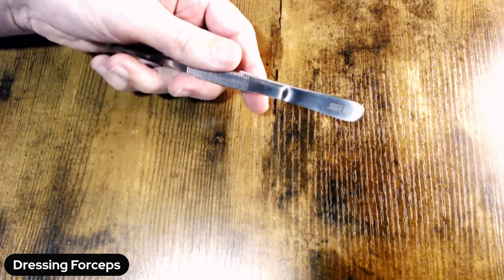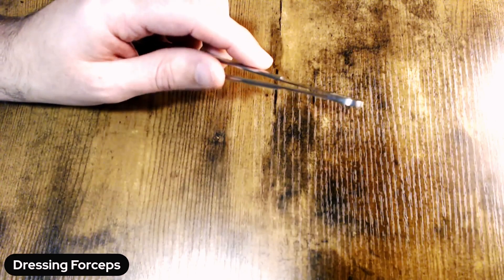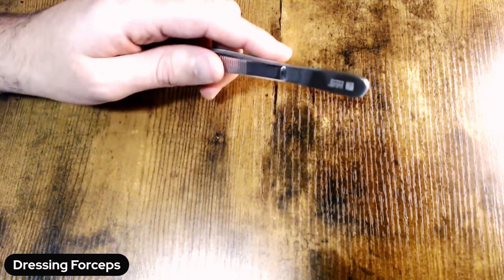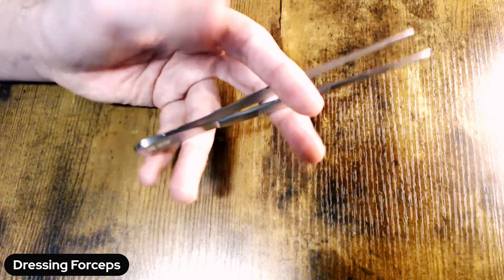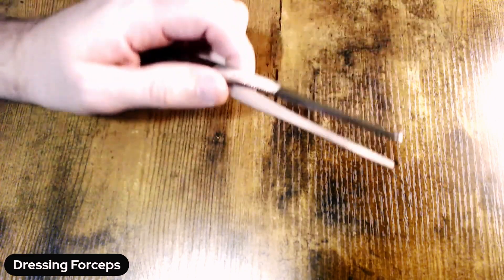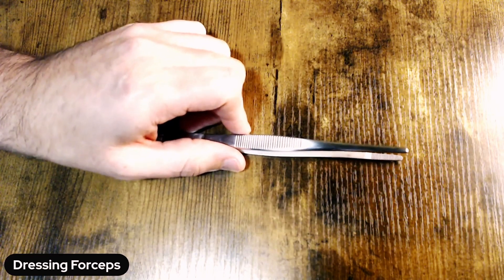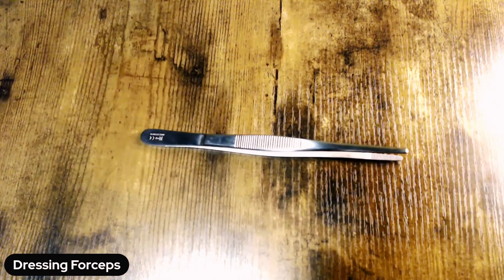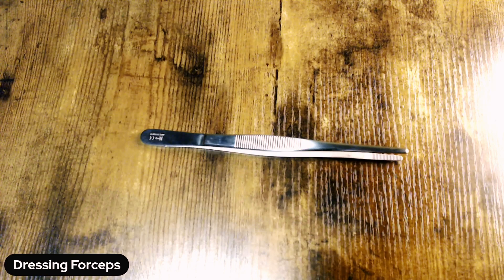And then on the back end of our forceps, you're going to want to look for any cracks in the handle to make sure that this device is not compromised in any way. And sometimes those cracks can be fairly small. So as with all of our devices, it's a great idea to have a lighted magnification tool at your assembly area when inspecting and identifying these devices.